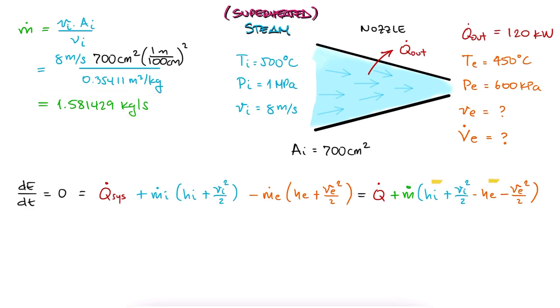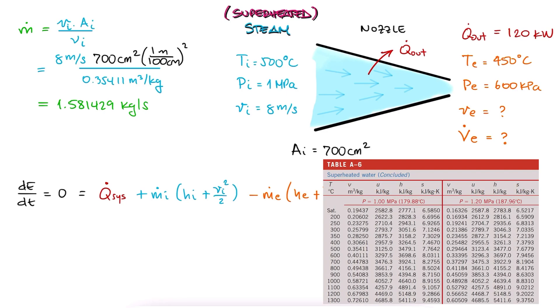As for the specific enthalpy values for the inlet and the outlet, we can use the same superheated vapor tables using the temperature and pressure information. For the inlet, we have the same subtable for the 1 MPa pressure and the same 500 degrees Celsius temperature value to find the specific enthalpy, HI, of 3479 kJ per kilogram.